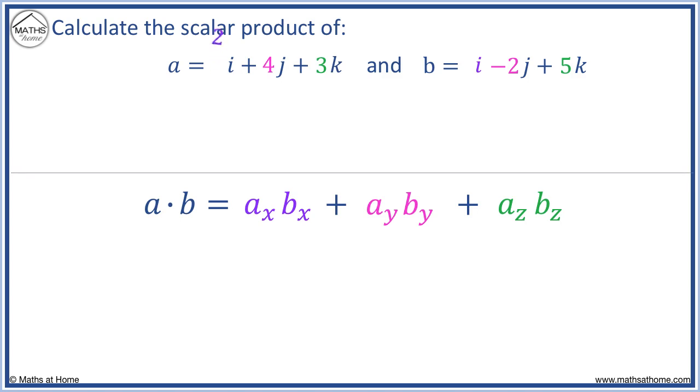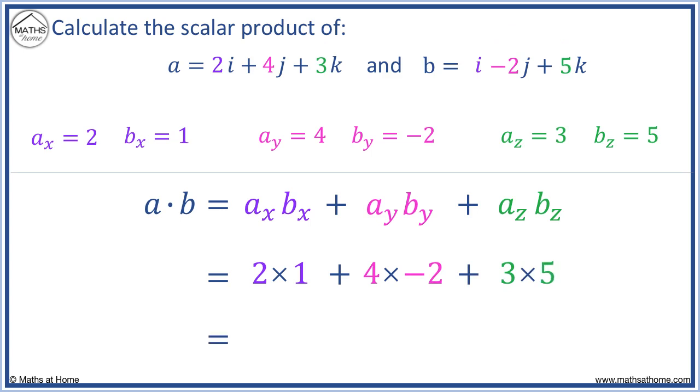So AX equals 2, BX equals 1, AY equals 4, BY equals minus 2, AZ equals 3, BZ equals 5. Therefore, the dot product becomes 2 times 1, plus 4 times minus 2, plus 3 times 5, which equals 2 plus minus 8, plus 15, which equals 9.